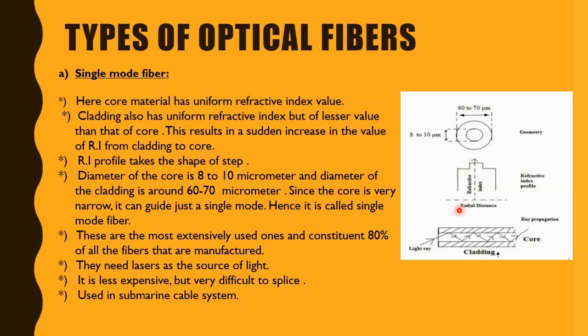The diameter of the core is 8 to 10 micrometers and the cladding diameter is around 60 to 70 micrometers. Since the core is very narrow, it can guide only a single mode, which is why it is known as single mode fiber. These are the most extensively used fibers, constituting 80 percent of all fibers manufactured. They need lasers as the source of light.